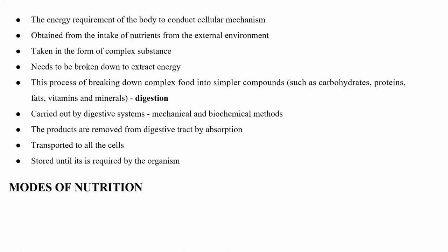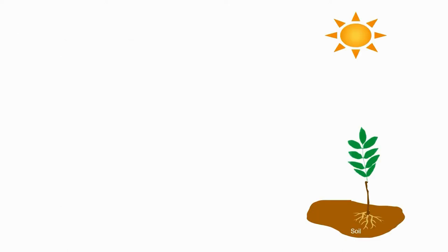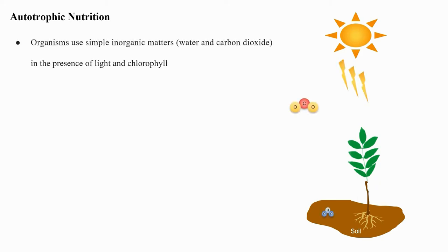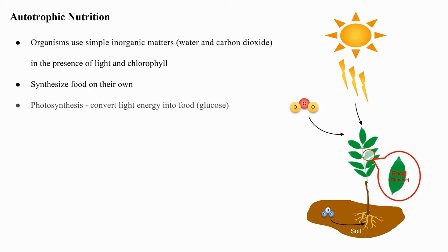Modes of nutrition include autotrophic nutrition and heterotrophic nutrition. In autotrophic nutrition, organisms use simple inorganic matter like water and carbon dioxide in the presence of light and chlorophyll to synthesize food on their own. The process of photosynthesis is used to convert light energy into food such as glucose. Such organisms are called autotrophs.